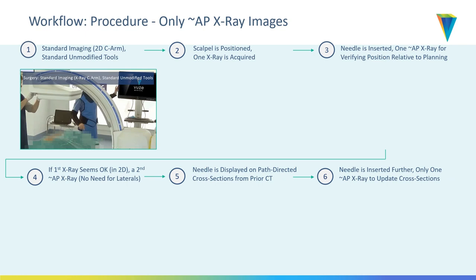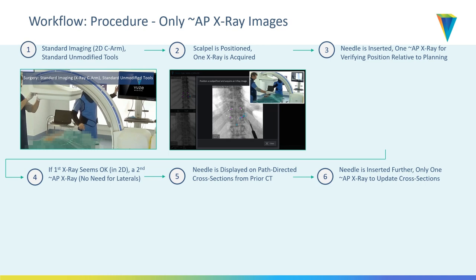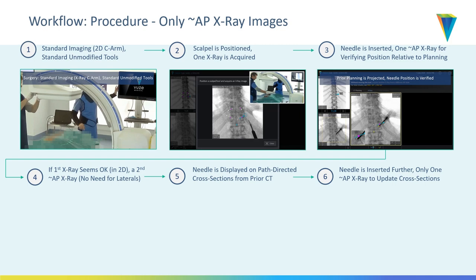Our planning is projected on each new x-ray image, showing the current viewing angle of the x-ray camera. With a single x-ray you place a scalpel and see where the incision should be, and make it. Next, we insert a Jamshidi needle and take one generally AP x-ray. The planning is projected automatically on the x-ray instantly, so you can see where your tool is relative to your planning.